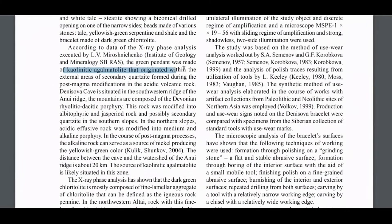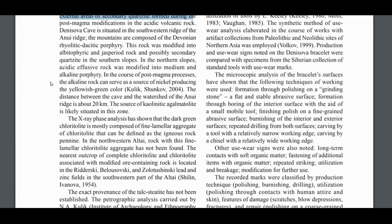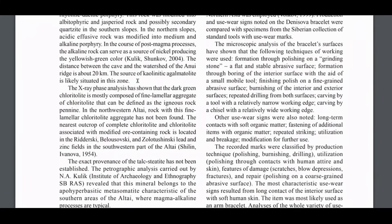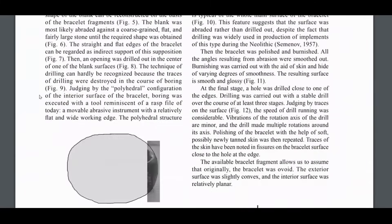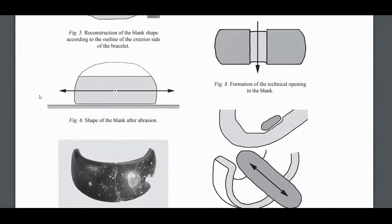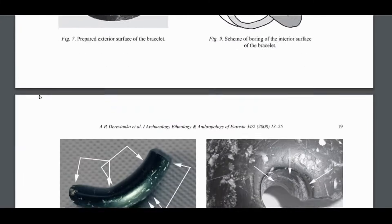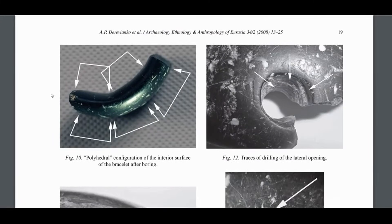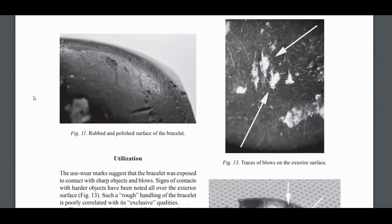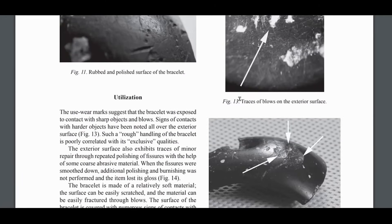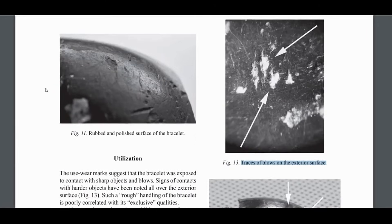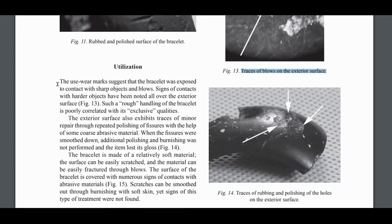Given the geographic and biological proximity of Denisovans to Neanderthals and early modern humans, it is also plausible that these groups interacted and exchanged knowledge. The Denisovan bracelet could be a product of such cross-species collaboration or influence, highlighting the interconnectedness of ancient human populations.